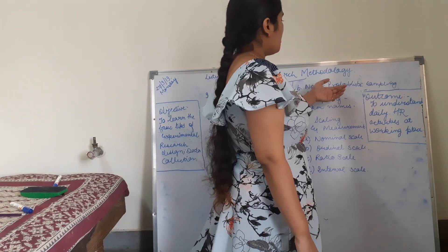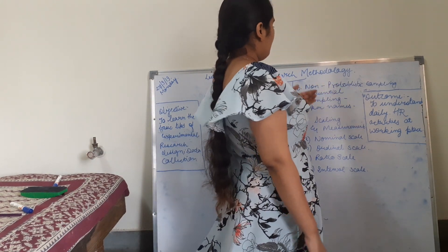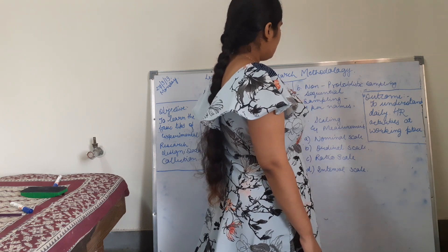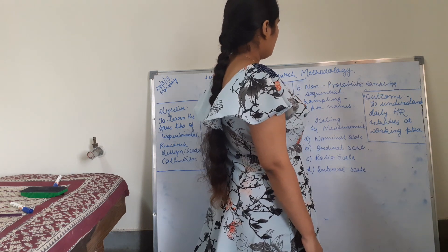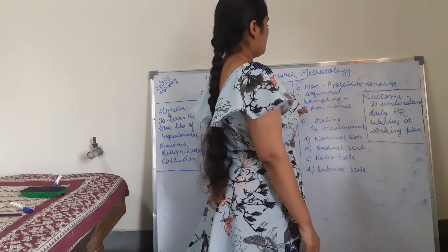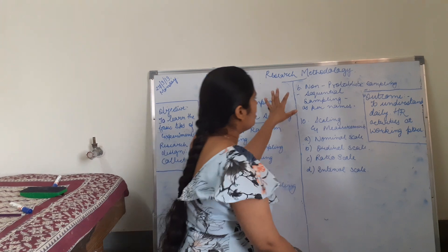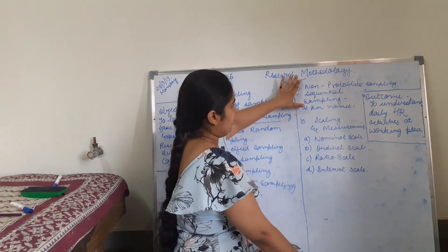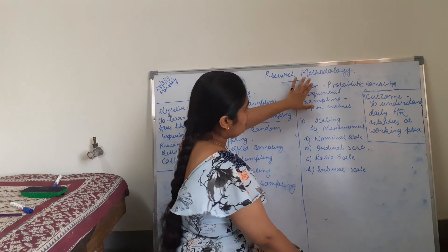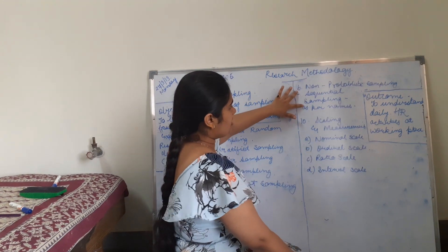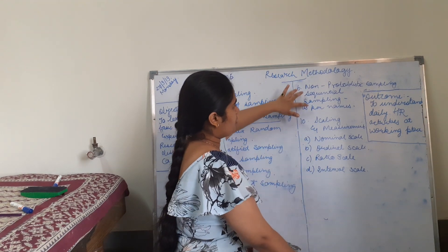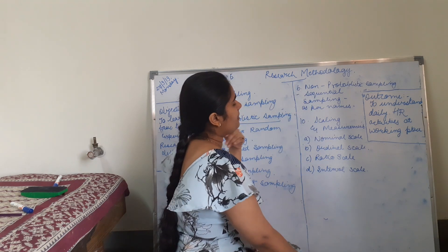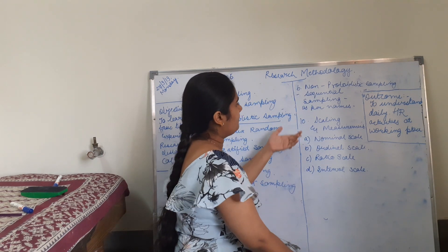So B is non-probabilistic sampling. In it comes sequential sampling — which is as per names. For example, attendance — attendance is done as per names, so sampling is done as per sequence. So it is non-probabilistic sampling.